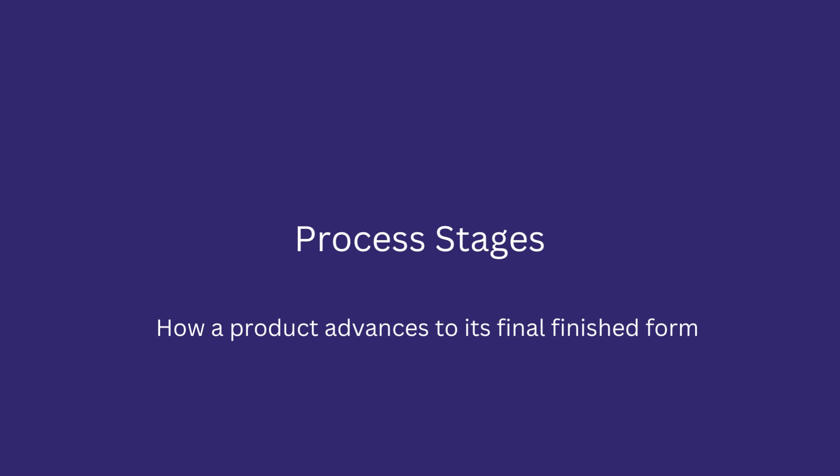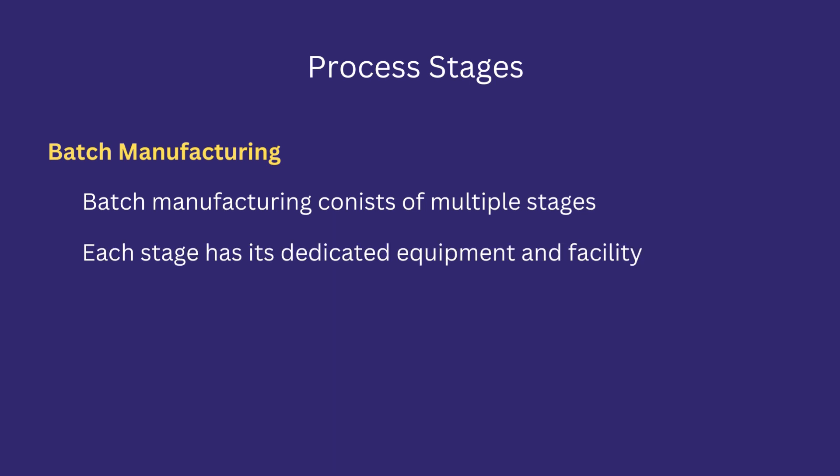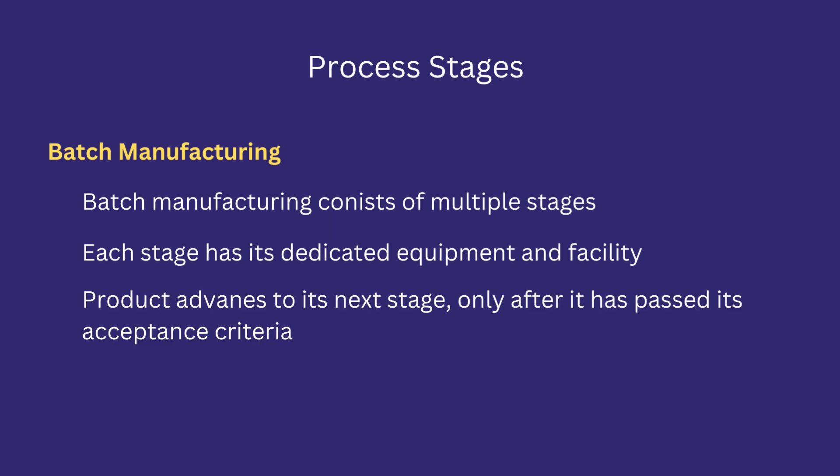Process stages mean how a product advances towards its lifecycle until it is converted to its final finished form. In batch manufacturing, there are multiple stages of the production process. The product is manufactured in its finished form by passing through different stages. Each stage has its dedicated equipment and facility, and equipment or facility of one stage cannot be used for another stage. The product advances to its next stage only after it has passed its acceptance criteria. If the product does not pass the acceptance criteria, the process is repeated until it passes.